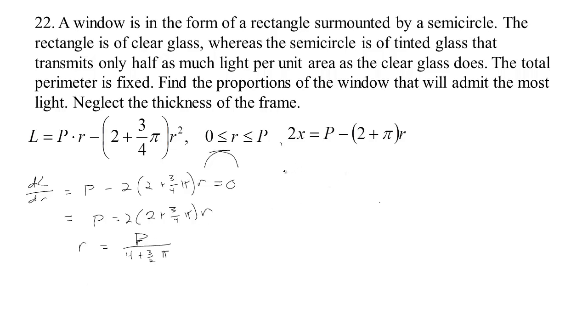Let's see what that says about the dimension x, which was the height of the rectangular part of the window. According to this relationship, 2x should be the perimeter minus 2 plus pi times the radius. And we found that the radius should be the perimeter over 4 plus 3 halves pi. And I just want to simplify that a little bit. I'm going to get a common denominator and put those together.